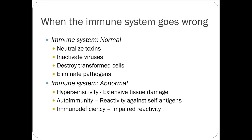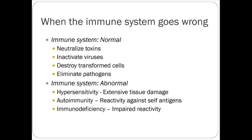This slide talks about the adaptive immune system and how B cells and T cells work. I'm not going to spend a lot of time on it or test you on it — it's more or less a pathophys review. Normally your immune system does nice things: it neutralizes toxins, inactivates viruses, destroys transformed cells, and fights pathogens.